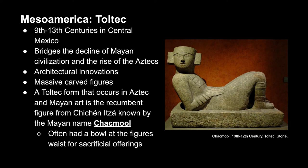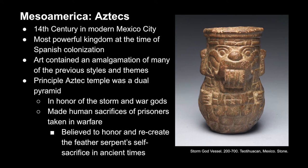In the 14th century, the Aztecs settled in modern-day Mexico City. At the time of the Spanish colonization they were the most powerful city, and when the Spanish visited the Aztec capital they found it cleaner and better governed than most European cities. Their art was an amalgamation of the many previous styles and themes that came beforehand, and beyond art, they also had highly developed forms of poetry and literature. The principal Aztec temple was a dual temple created to honor the storm and war gods, and it was also the site where prisoners of war were made into human sacrifices. In doing this, the Aztecs believed they were honoring and recreating the feathered serpent's sacrifice in ancient times.